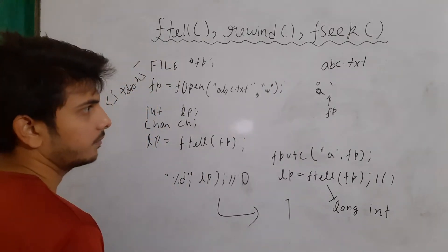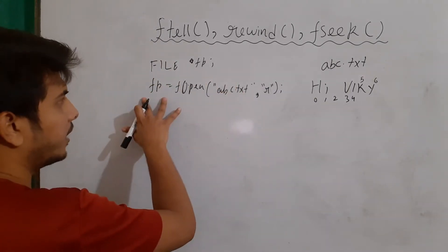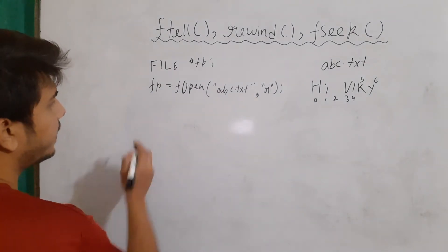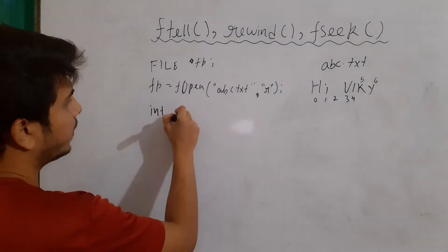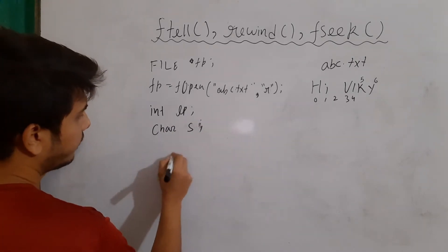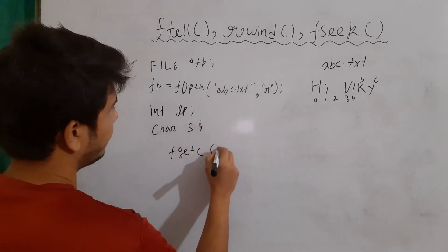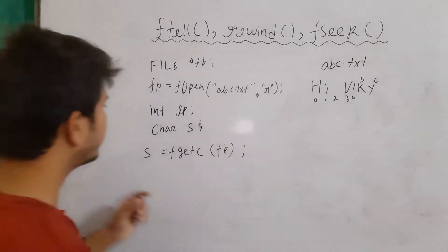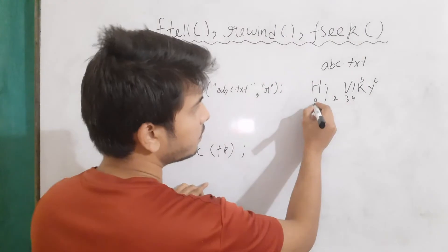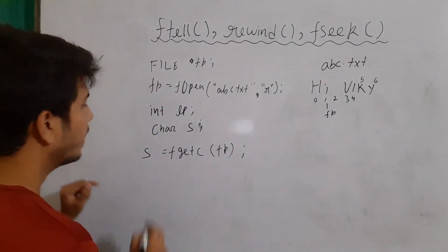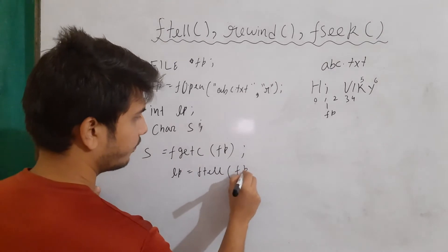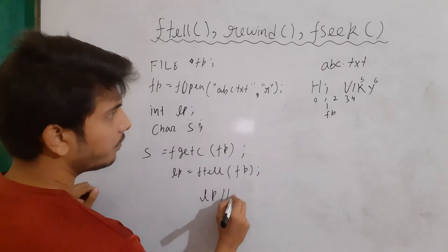Now let's talk about the rewind function. The rewind function takes a file pointer as input and brings the file pointer to the starting of the file, no matter where it currently is. Let's say there is a variable int lp and char s. If I read the file content using fgetc(fp) and assign it to s, it reads the first character and increments fp. So now if I write lp equals ftell(fp) and print lp, it gives output as 1.